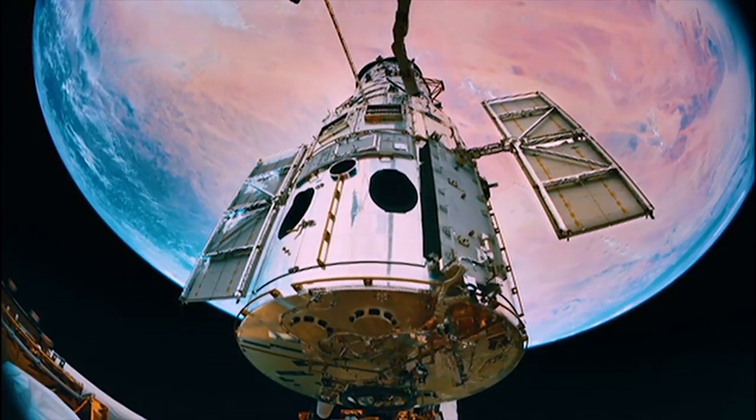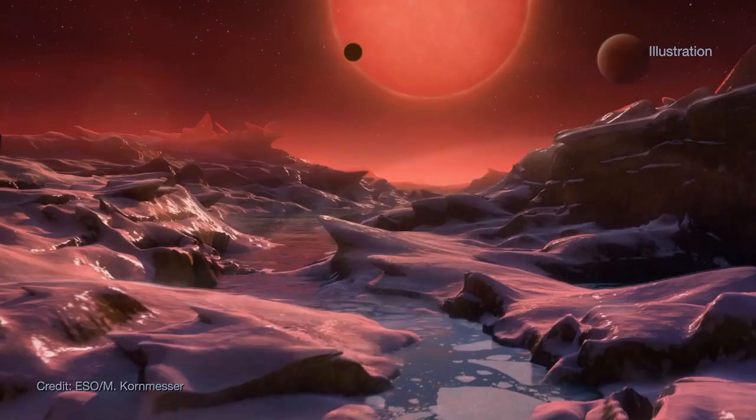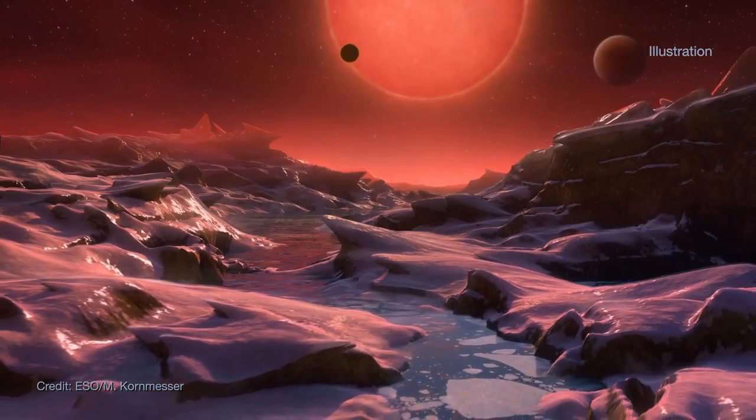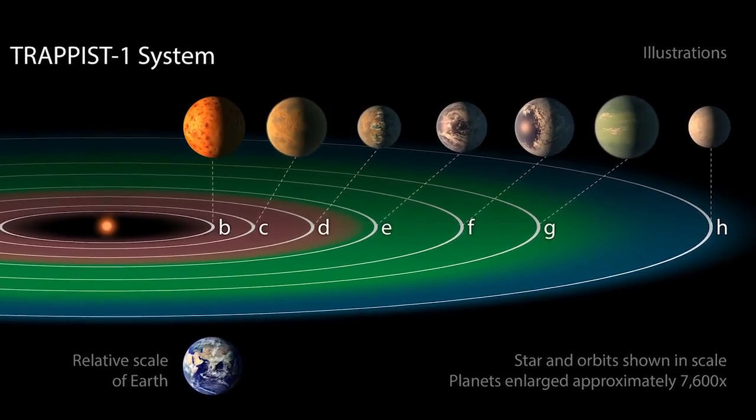NASA's Hubble Space Telescope has looked for evidence of atmospheres around several Earth-sized planets in the TRAPPIST-1 system, including three that are in the star's habitable zone, where liquid water could exist on the surface.